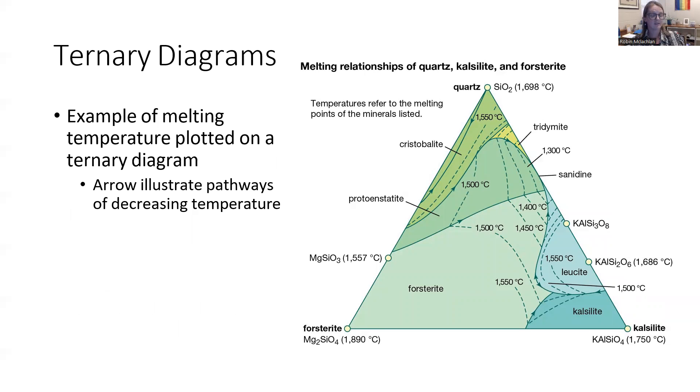And you can also plot a lot of other information on top of ternary diagrams. So here, it's not only showing the three different end members, the three different minerals that can be mixed together in a solid state solution, quartz, forsterite, and calcite, and showing you the temperatures that those mixtures happen.